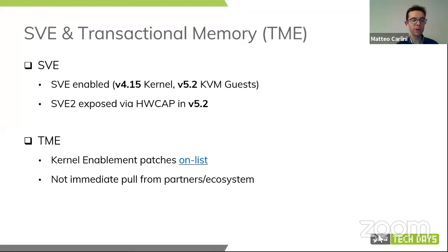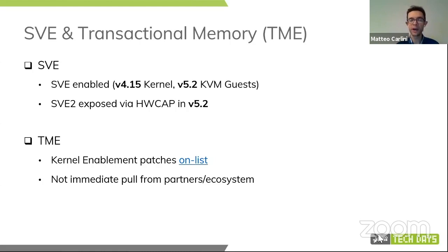New architectural features: SVE and transactional memory. SVE — the evolution of NEON instructions — has been enabled for quite a long time now, since 4.15 in the kernel and in KVM starting from 5.2. SVE2, the enhancement of SVE announced a bit more than a year ago, has been exposed to user space through hardware caps in 5.2. Not much work is left to be done in the kernel — it's mostly a user space effort to make use of the SVE2 instructions.